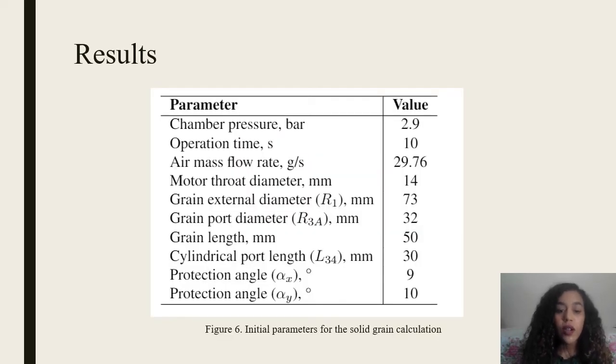Results: Figure 6 shows initial parameters for the solid grain calculation, defining the geometry of the grain and flow conditions. The authors calculated the evolution of the grain geometry, fuel regression, and composition of the combustion products. The model operation time is 10 seconds.